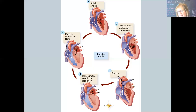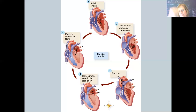The AV valves include the tricuspid valve on the right side — the right AV valve has three cusps and has chordae tendinae like the spokes of an umbrella. On the left side we have the mitral valve, or bicuspid valve, which has two cusps. We also have the semilunar valves, which prevent backflow of blood once it's been ejected back into the ventricles. The AV valves prevent backflow into the atria; the semilunar valves prevent backflow into the ventricles.